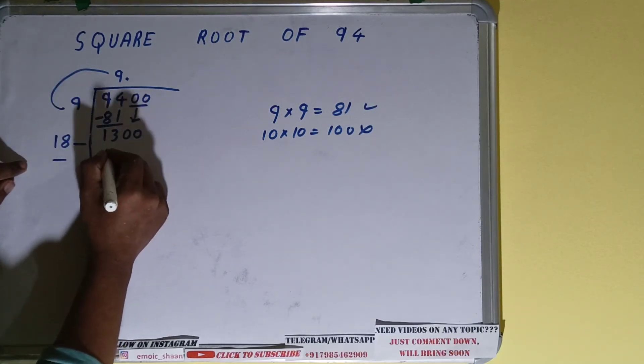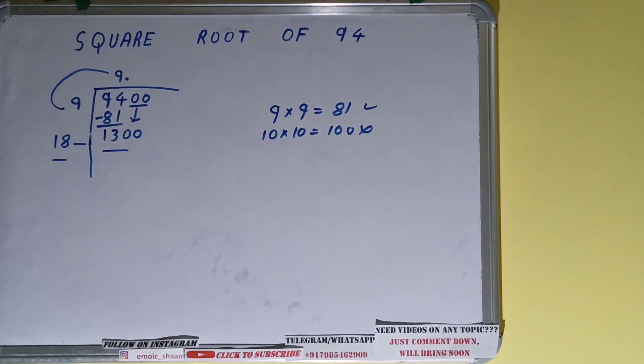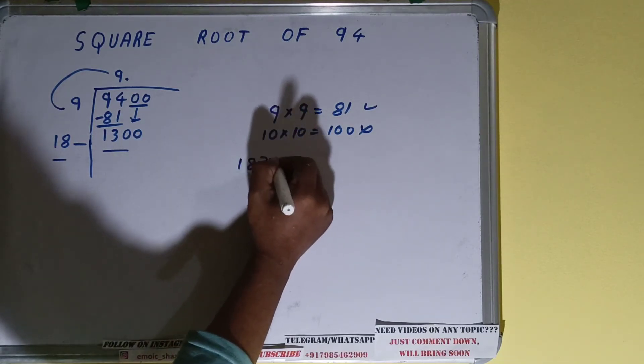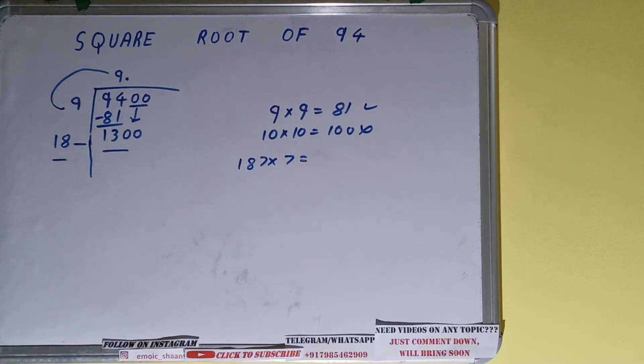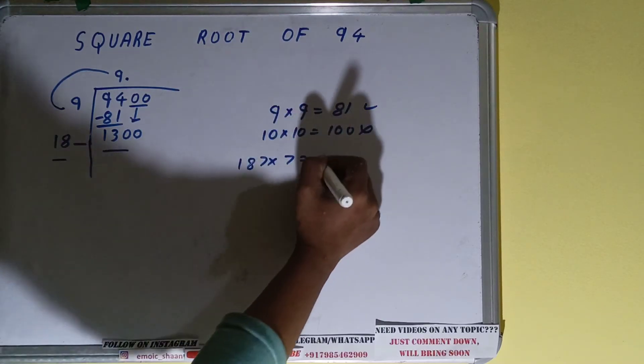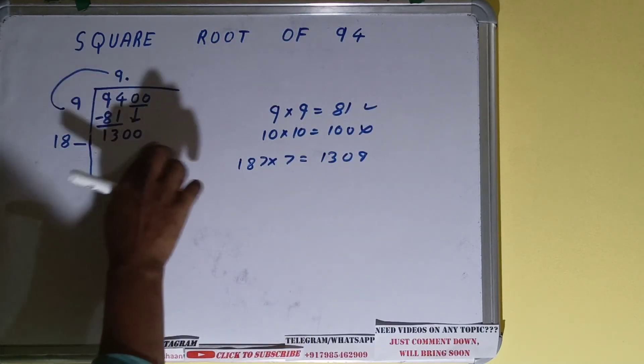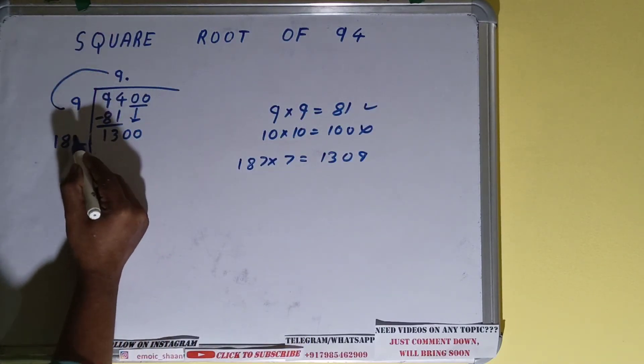So now compare this 18 with this 130. So 18 eight times, we know it is 144, right? 18 seven times is 126, so we can try seven times. 187 into 7 we can try, it will be 1309.